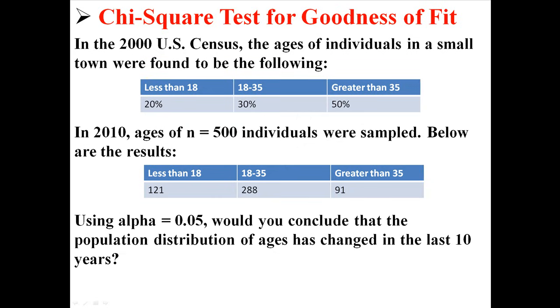We have 121 people who are less than 18, 288 that are between 18 and 35, and 91 that are greater than 35. Using alpha equals 0.05, would you conclude that the population distribution of ages has changed in the last 10 years?